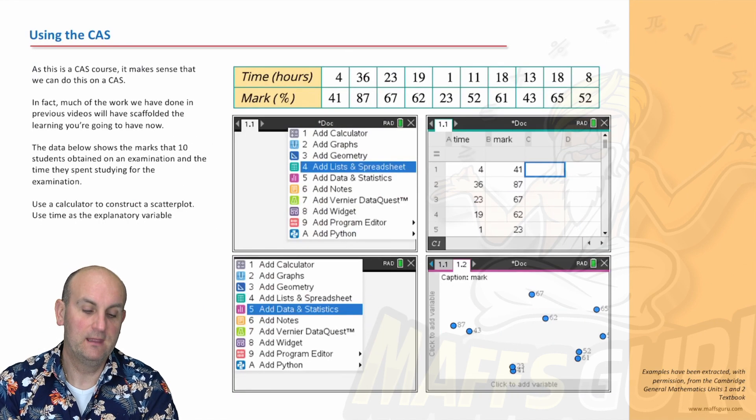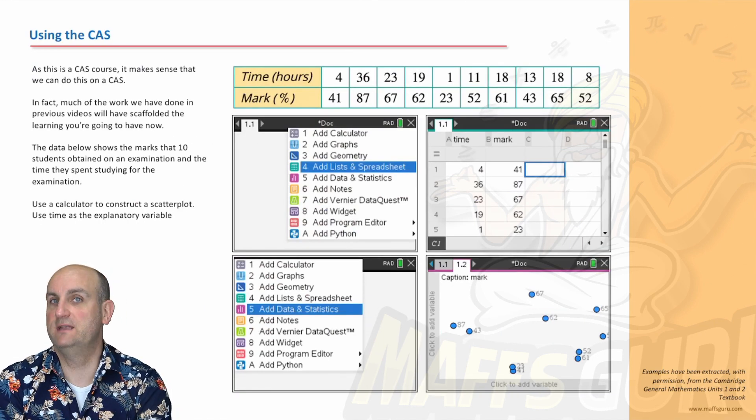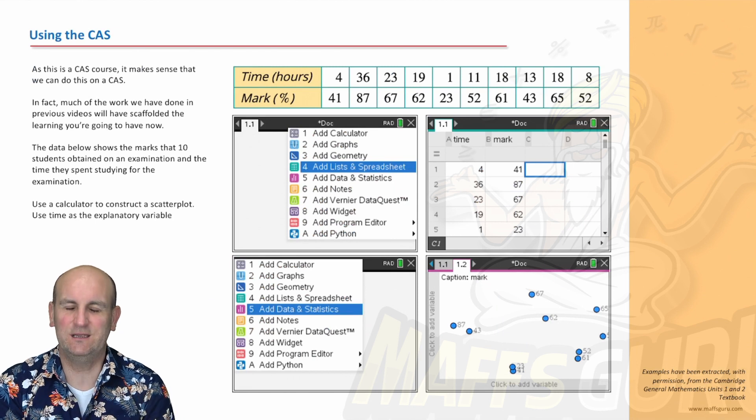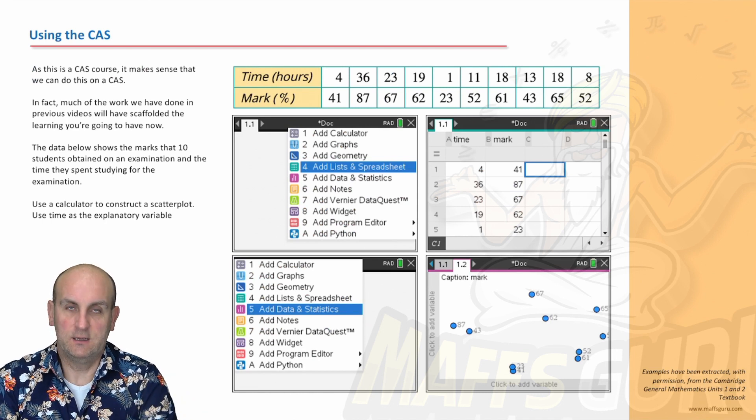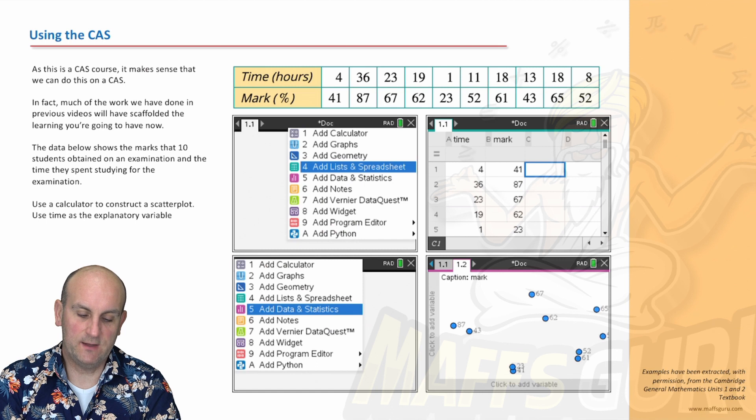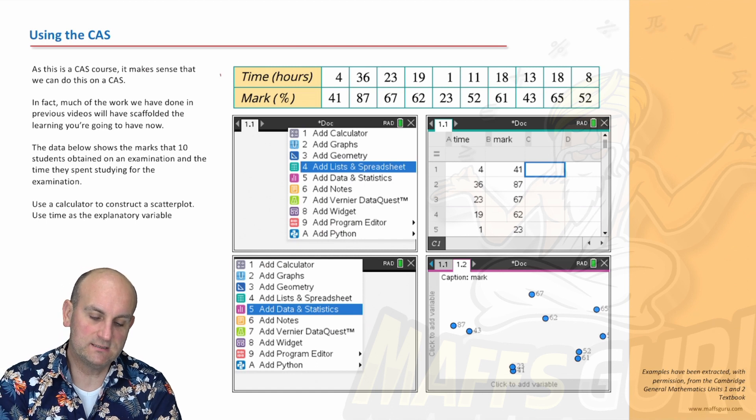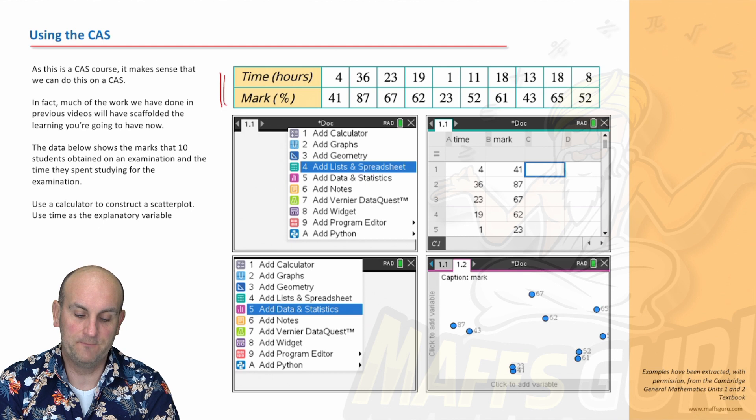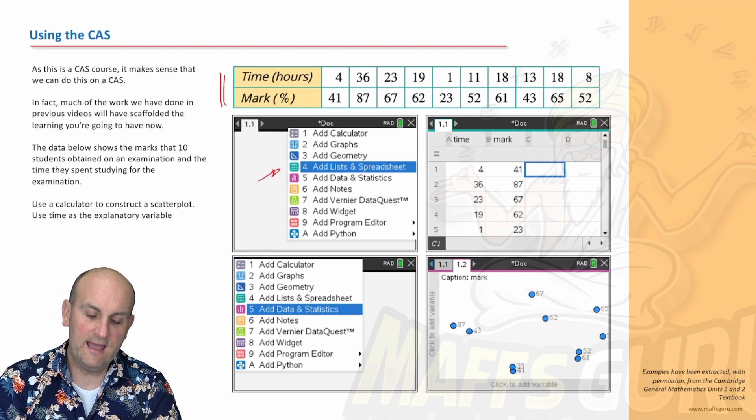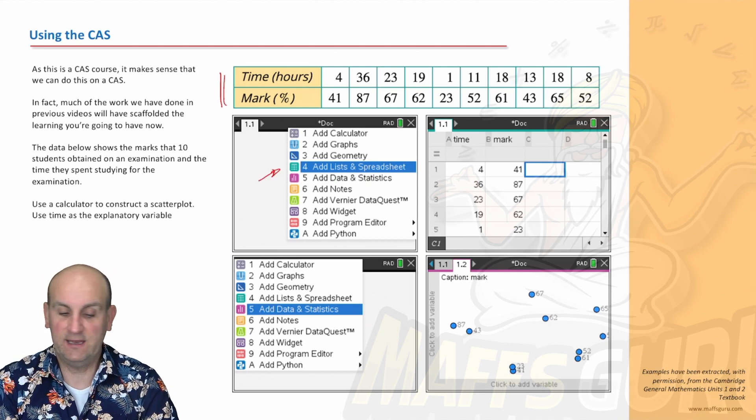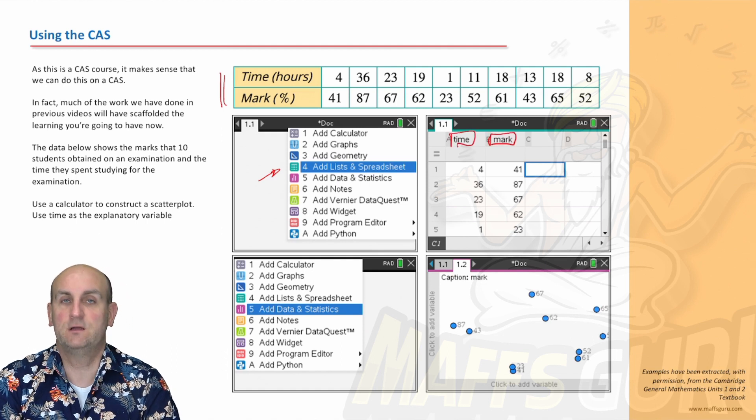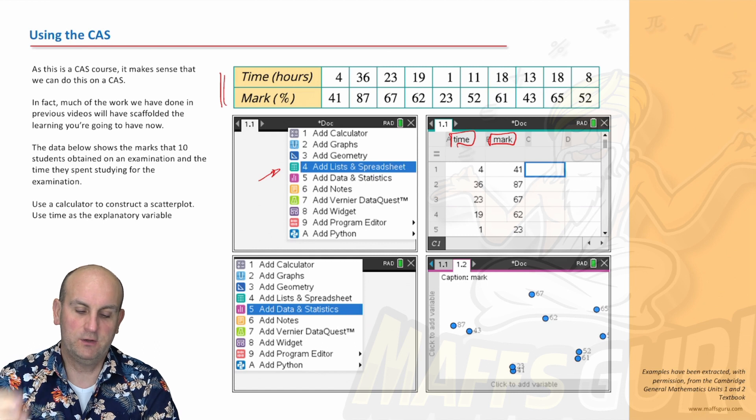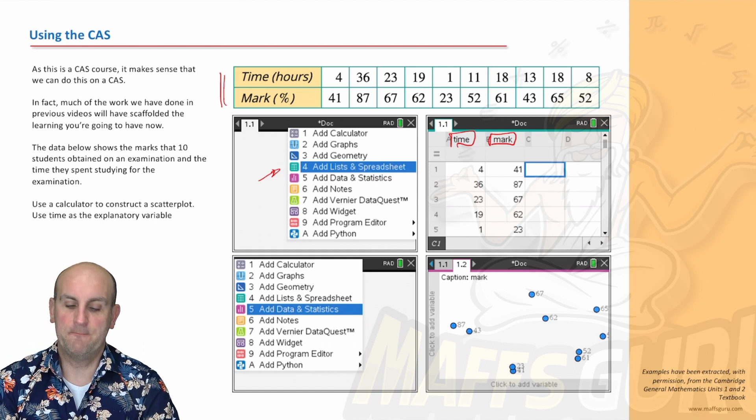What about the CAS? Well, TI Inspire users, these are for you. Casio Classpad is very similar to this type of thing. Don't worry about it. Same idea, but we're going to use the TI Inspire. Now, what you've noticed is I've just taken the time and mark. I've deleted that student column. So what do we do? Number one, we add a list and spreadsheet. And the first thing I tell you to do every single time is to put the titles in first. They're going to be relatively short, but the good thing here is we can put time and mark.